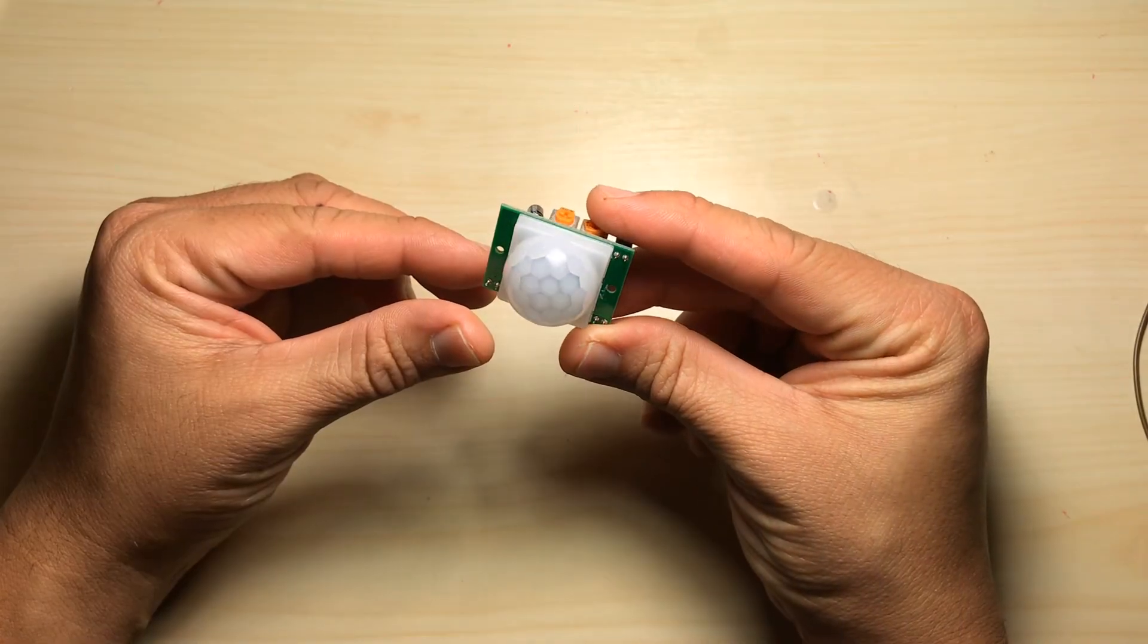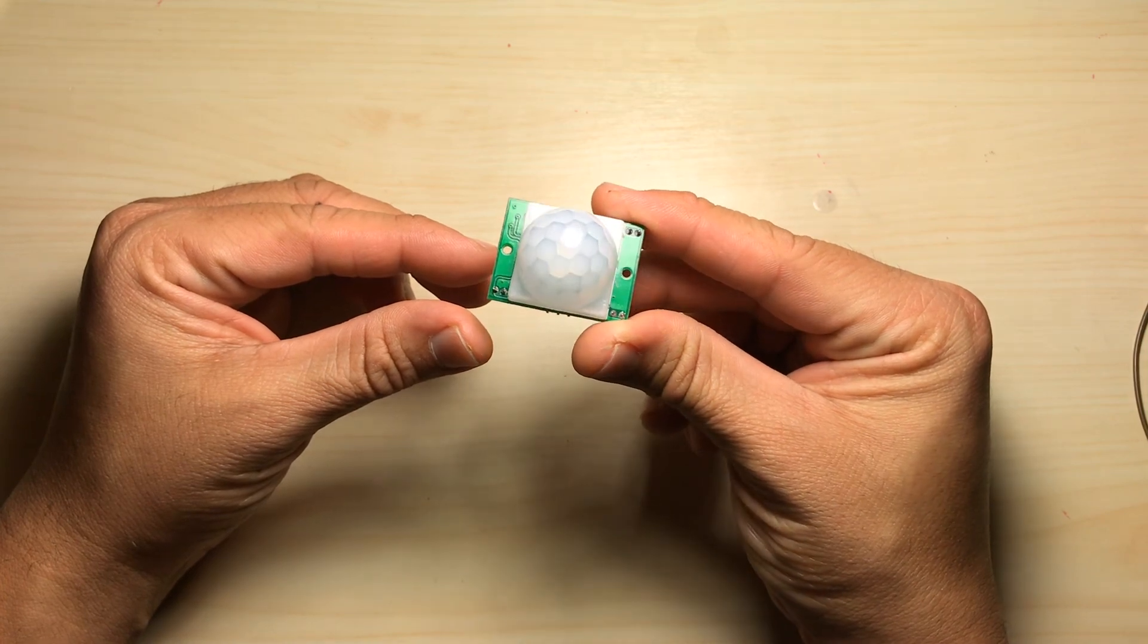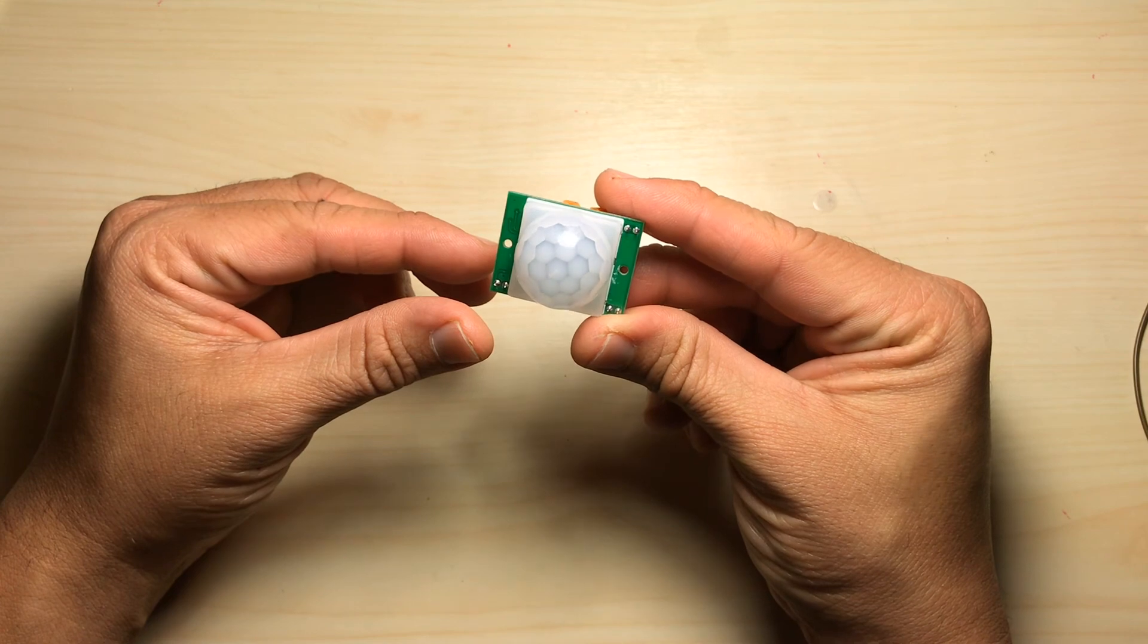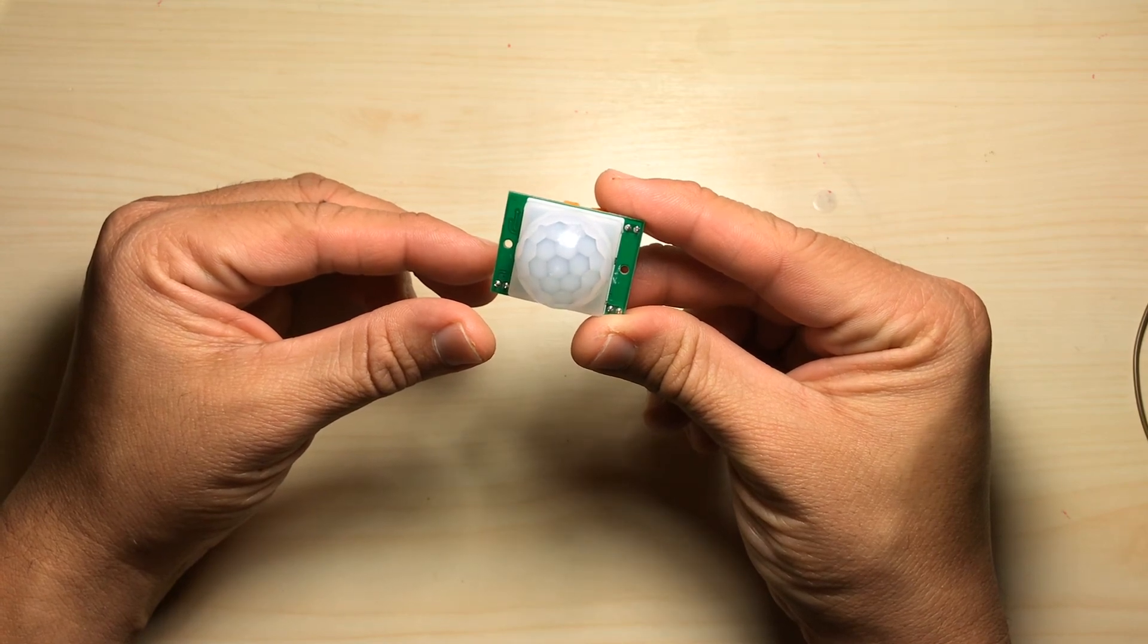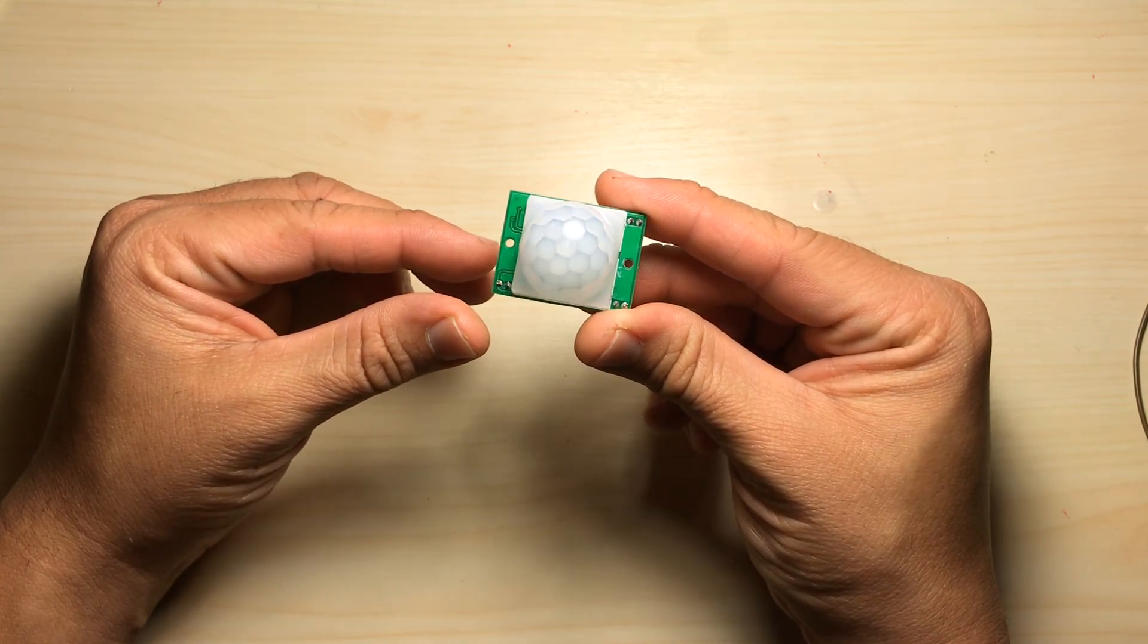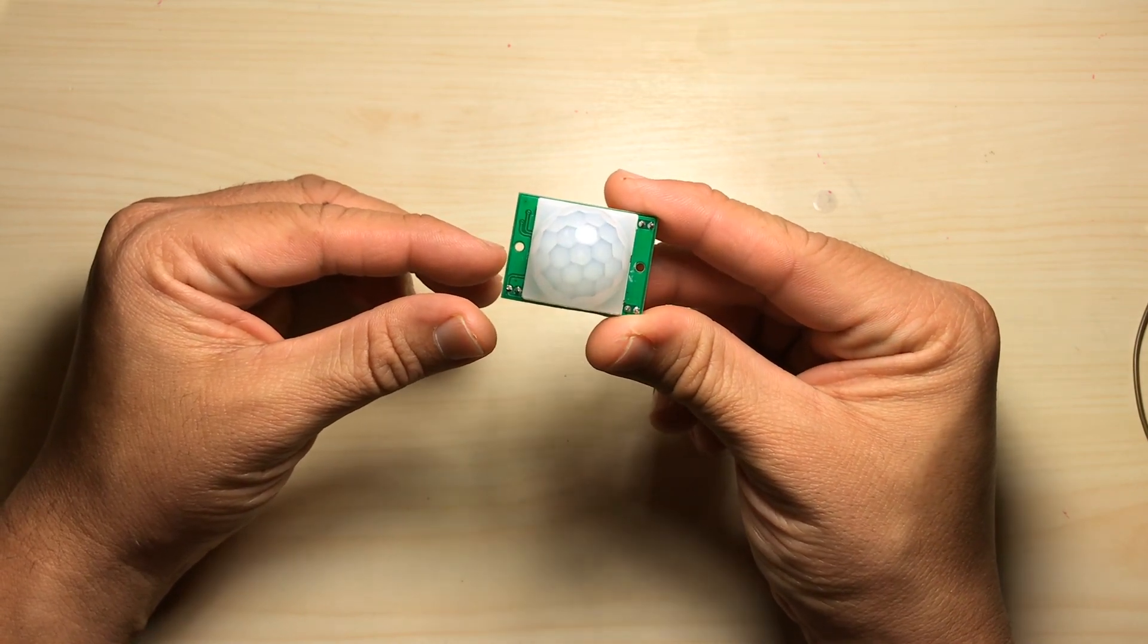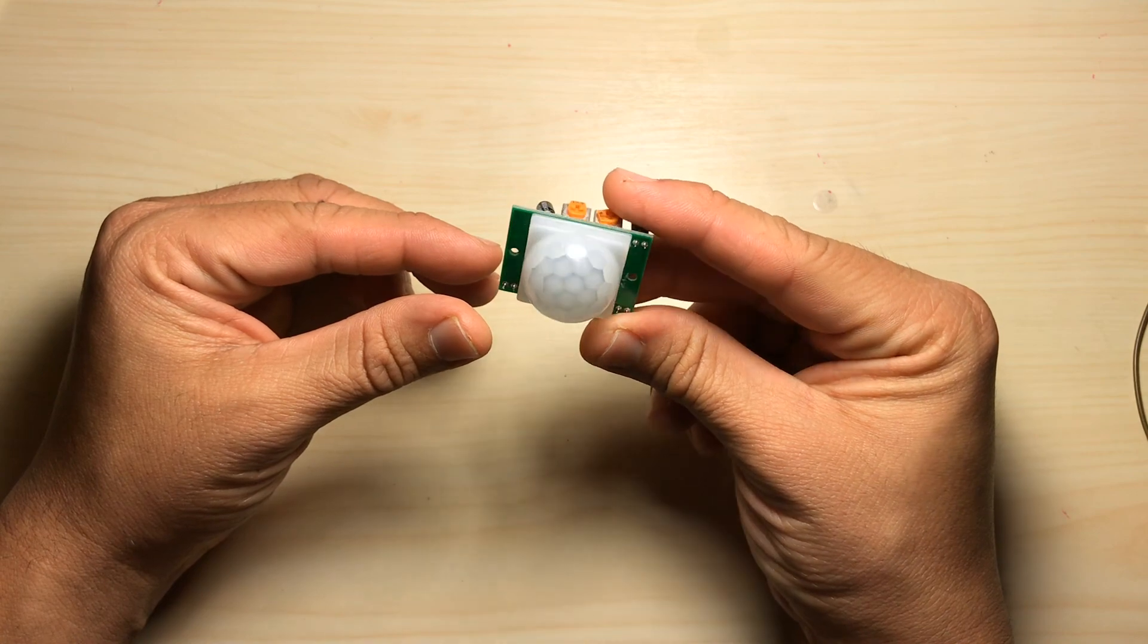We will be connecting this PIR sensor to our Raspberry Pi and using it to detect motion. This has a lot of applications and can be used in a security project such as if motion is detected an alarm can sound, lights can be turned on, or a text message can be sent.